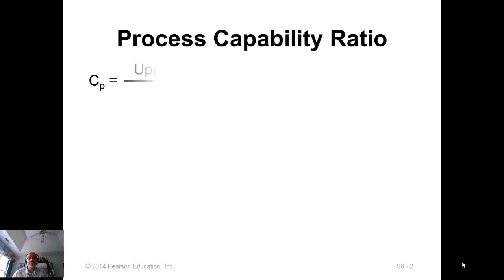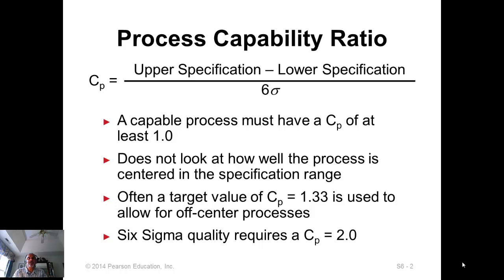We compute two different process capability numbers. One is called the process capability ratio. The process capability ratio looks at the specification width — upper specification minus lower specification — and checks whether plus or minus three sigma will fit into that. If plus or minus three sigma will fit into it, then your process variability is smaller than what is allowed in the specification, which is good.